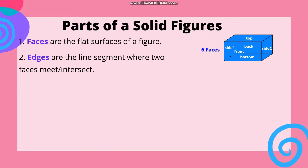Number two: Edges. Edges are the line segments where two faces meet or intersect. Ang edges naman ay ang mga line segment o guhit kung saan nag-meet ang dalawang faces. Let's count the number of edges of a rectangular prism: one, two, three, four, five, six, seven, eight, nine, ten, eleven, and twelve. So we have twelve edges in a rectangular prism.